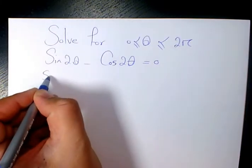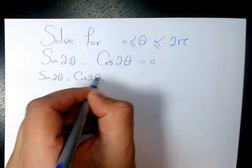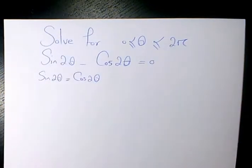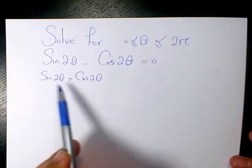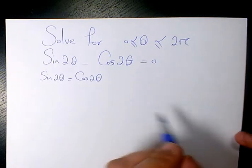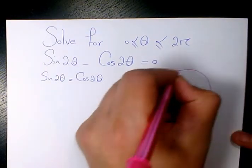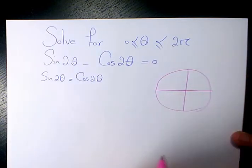So the first thing I'm going to have is sine 2 theta equals to cosine 2 theta. In what case we have these two equals to each other is going to be where both of them are positive or both of them are negative.